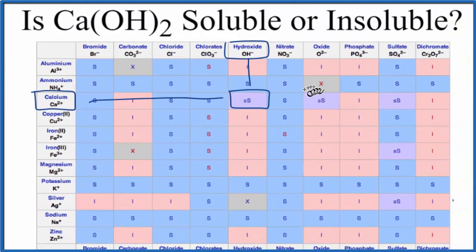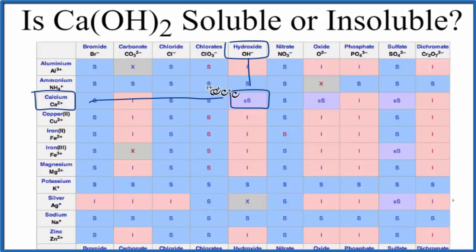There is one more way we could figure out whether calcium hydroxide is soluble or insoluble in water: we could just put some in water and see what happens, maybe stir it around. Based on our rules and our chart, we would find that some of it would dissolve — just a little bit — it would be slightly soluble. In fact, when that happens, when we put calcium hydroxide in water, it's called lime water.